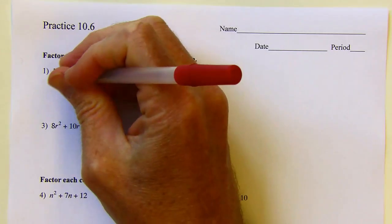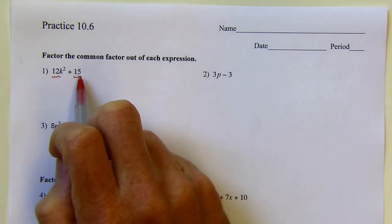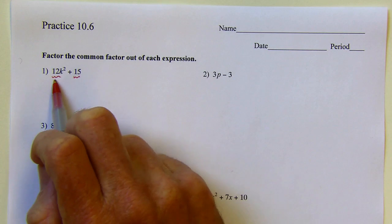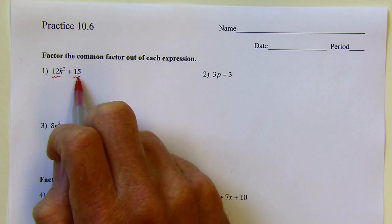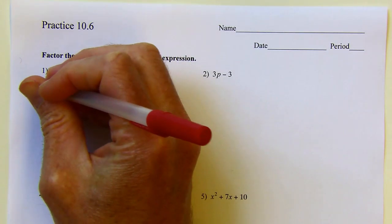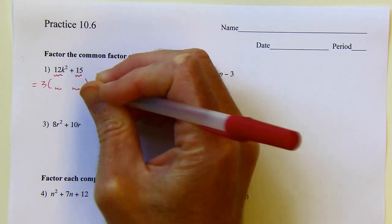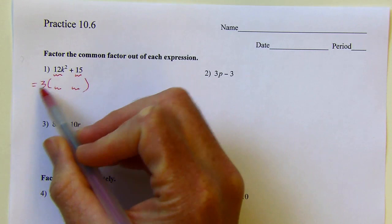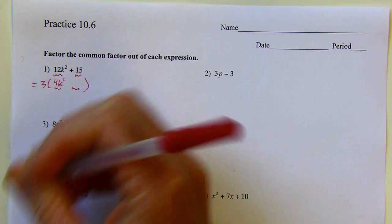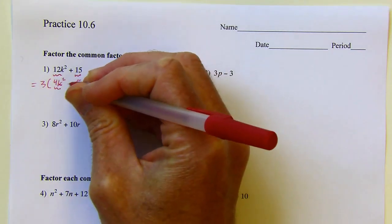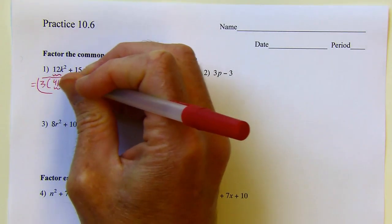So that just means I'm thinking, what goes into 12k squared and 15? Well, k squared doesn't, because there's no k in that second term. But thinking about what goes into 12 and 15 — 3 goes into both of them. Because 3 times 4 is 12, and 3 times 5 is 15. So I can factor a 3 out, thinking about undistributing it. 3 times 4k squared gives me 12k squared, and 3 times 5 gives me 15. There's nothing that goes into 4 and 5, so I know this is completely factored.